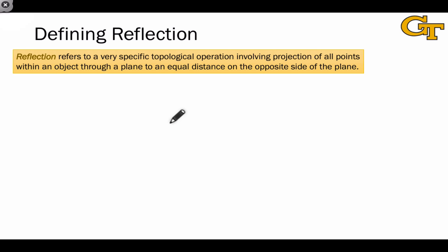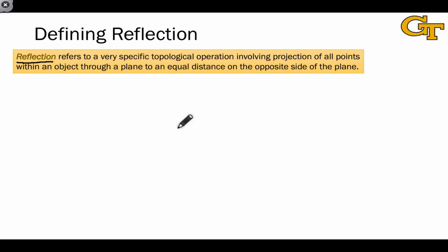To really appreciate what chirality means for molecular properties, we have to have a firm understanding of what we mean by the mirror image. The mirror image of a molecule is generated through a very specific topological operation called reflection. This refers to an operation where we start with a plane, project all of the atoms and bonds onto this plane, and then send them through the plane at an equal distance out the other side. Reflection of an achiral object or molecule generates an image indistinguishable from the original.